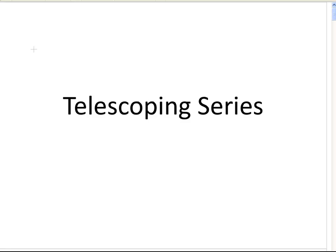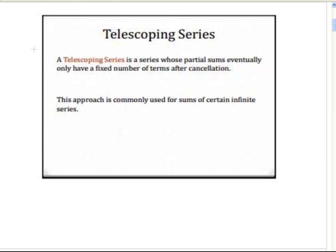In this presentation we're going to look at telescoping series. It's part of sequences and series, and specifically it's a series — a summation. A telescoping series is a series whose partial sums eventually only have a fixed number of terms after cancellation. This approach is commonly used for sums of certain infinite series. The key thing to pick up is that after cancellation, there are a finite number of terms.